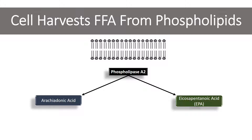Now we have various amounts of omega-3 and omega-6 fatty acids incorporated in our phospholipid bilayer. When the cell needs fatty acids to make signaling molecules, it grabs some of these fatty acid tails using an enzyme called phospholipase A2. It will end up grabbing either EPA or arachidonic acid, depending on what's available — which depends on what we've been eating.